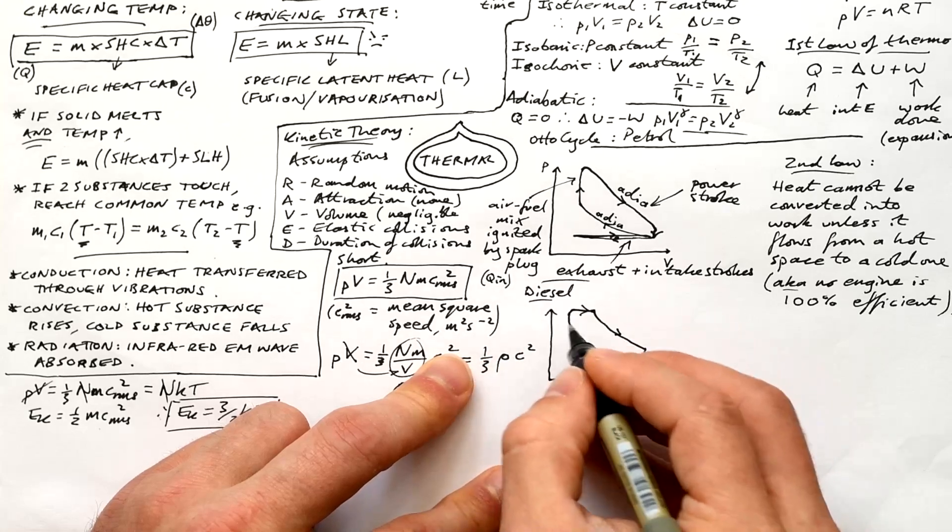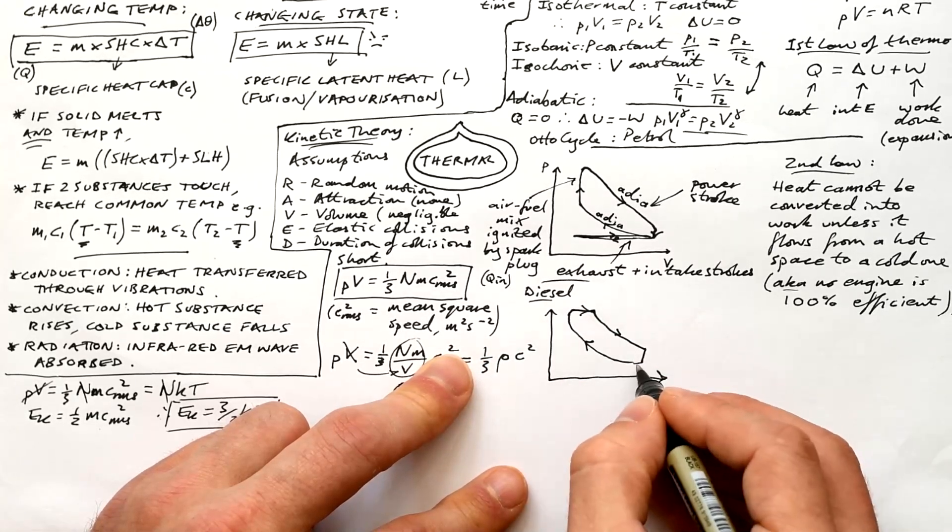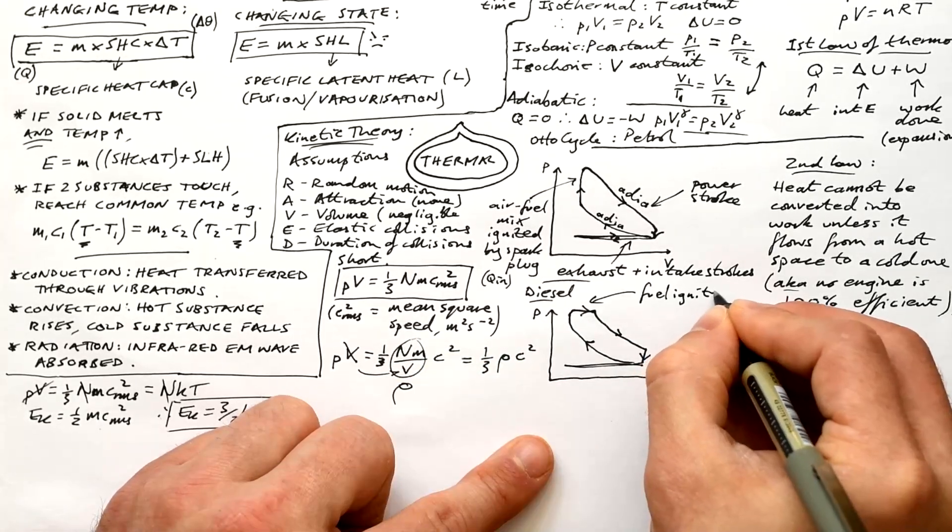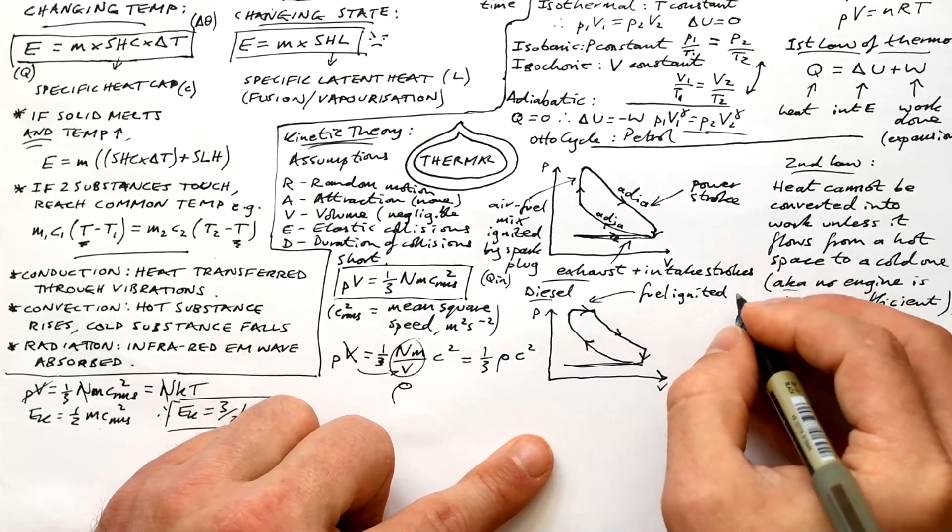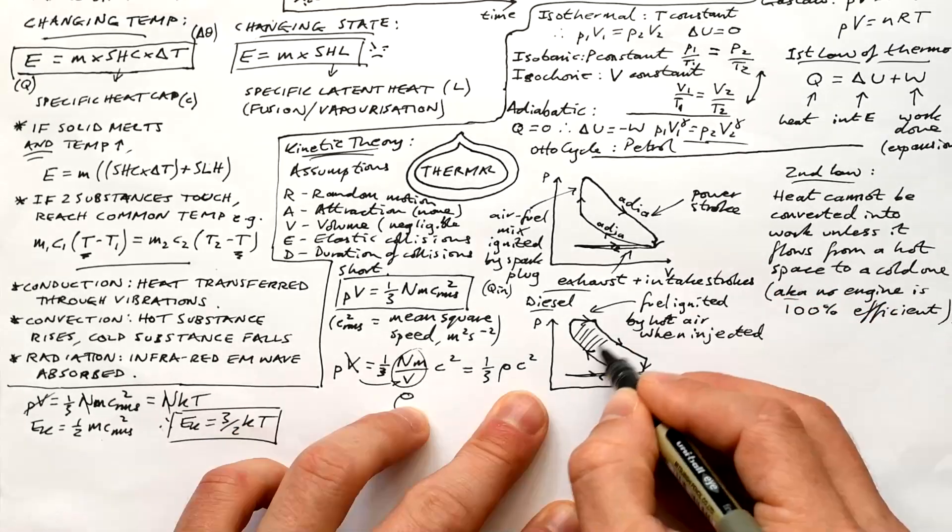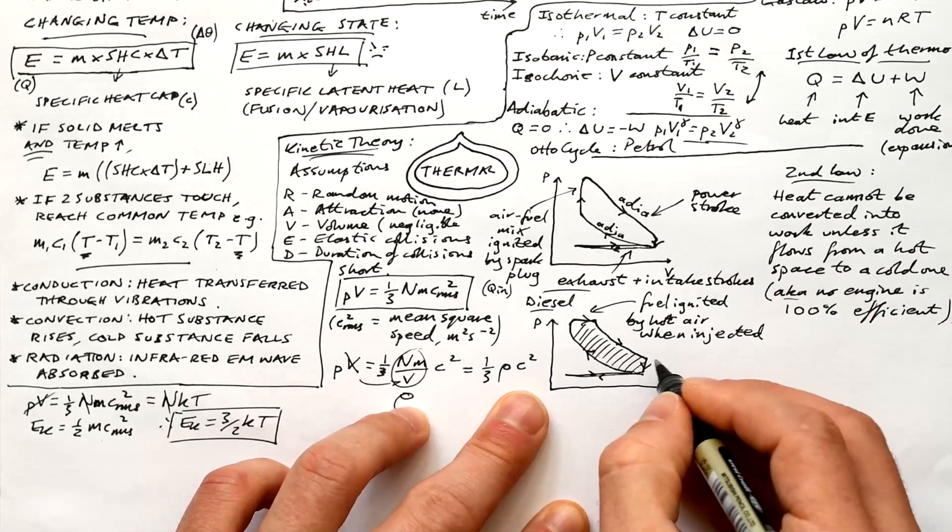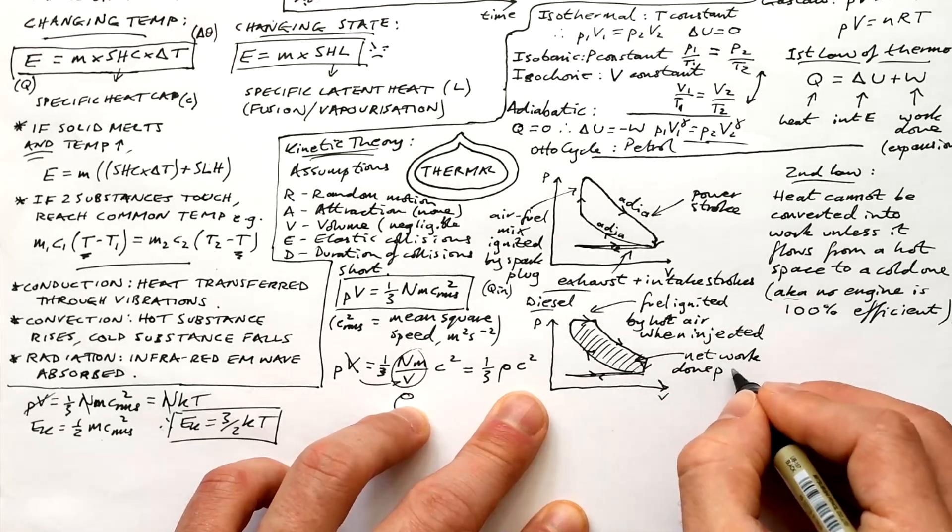Diesel, on the other hand, looks slightly different. What we have is air compressed and heated, and then we inject the fuel in and the fuel is ignited by the hot air. The area enclosed in each loop is equal to net work done per cycle.